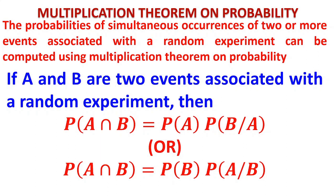Let us suppose A and B are two events associated with a random experiment. Then P of A intersection B — that is A and B — when 'and' comes, intersection will come. It will be P of A into P of B slash A if A has occurred first, and P of A intersection B is P of B into P of A slash B if B occurred first. We have already discussed in Conditional Probability what P of B slash A means: probability of B knowing that A has occurred. And P of A slash B means probability of A knowing that B has occurred.